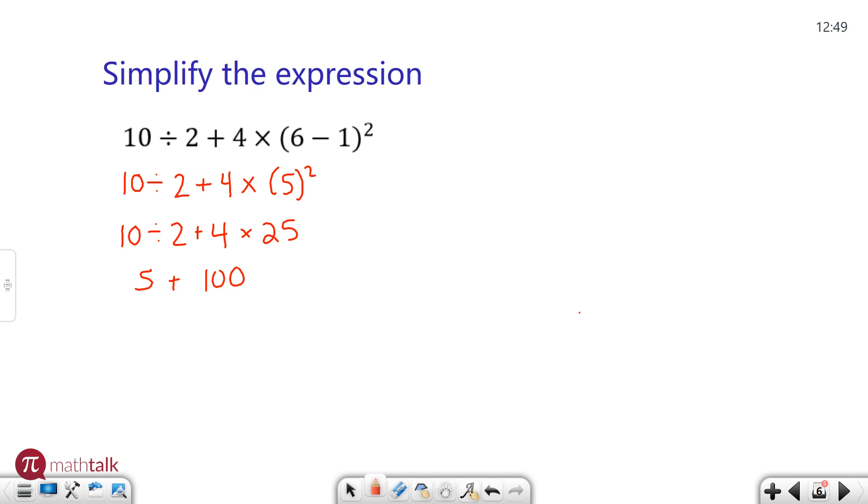Now it simplifies down to any addition or subtraction that are left. Again going left to right. Fortunately I only have one of those. 5 plus 100 is 105 which is your final answer for this simplified expression. So always remember PEMDAS, please excuse my dear aunt Sally and order of operations. Let's look at two more examples.